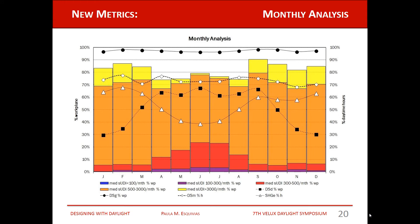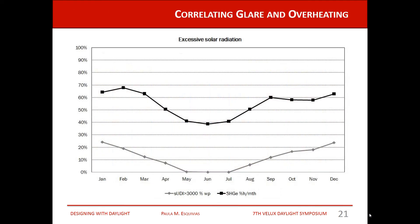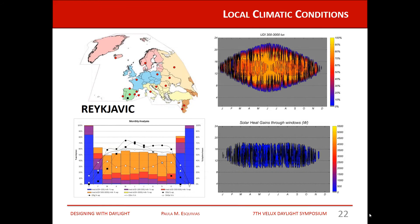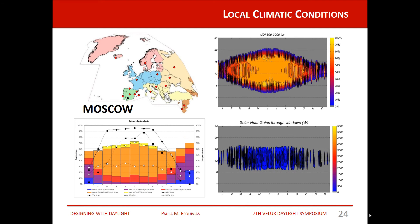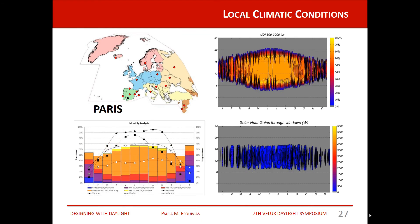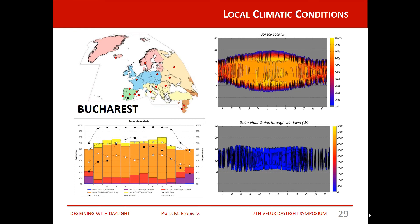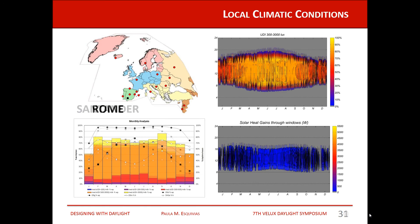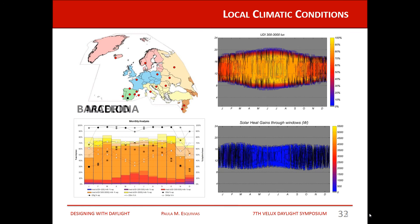These metrics can be presented in a monthly analysis, allowing us to see simultaneously the daylighting and insolation performance of a space. We can also correlate the probability of glare with the probability of overheating by correlating the percentage of the work plane with illuminances above 3,000 lux against excessive solar heat gain. Taking several European locations as examples, we can see that higher daylight availability in northern Europe occurs mostly in summer along with higher insolation, but as we move south, insolation is higher in winter — so we cannot apply the same daylighting strategies across all locations.